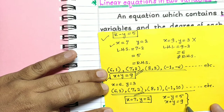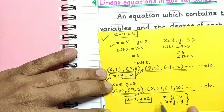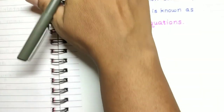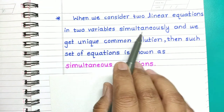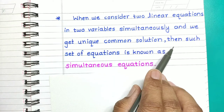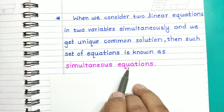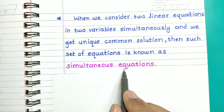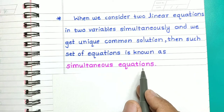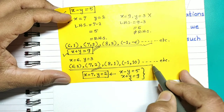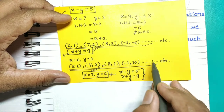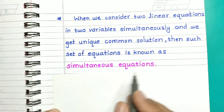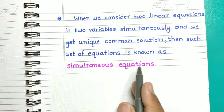When we consider two linear equations in two variables simultaneously, they give a unique common solution. When such a set of two linear equations in two variables gives a unique common solution, these equations are known as simultaneous equations. In the above example we listed ordered pairs and found a common one, but every time it is not easy to list all such pairs. So we need another method to solve simultaneous equations.